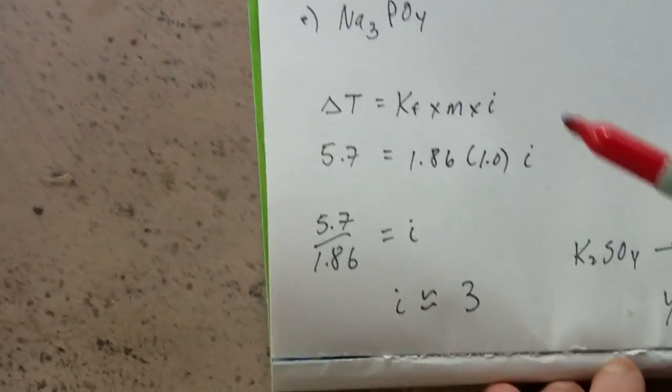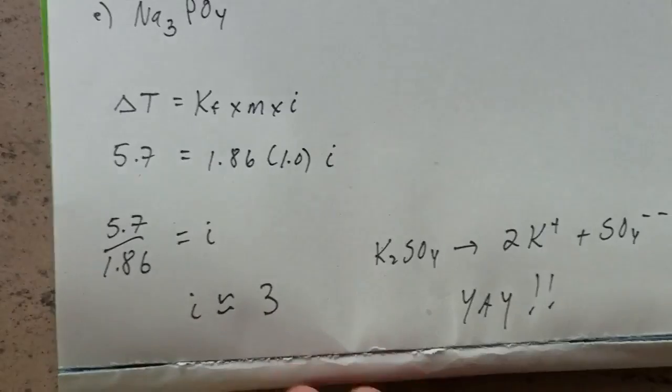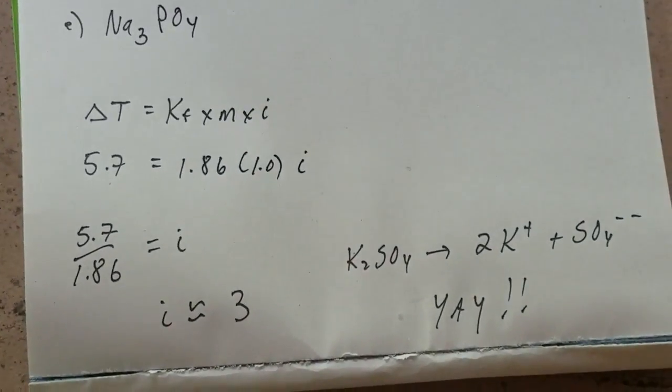Now, the first thing we do is write the formula. Delta T equals KF times M times i. i is known as the Van't Hoff factor, and it's the number of particles that could theoretically dissociate at high dilution.